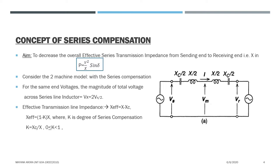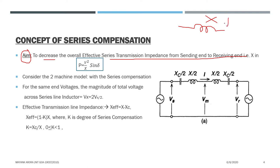The concept of series compensation: the aim is to decrease the value of the series transmission impedance from the sending end to receiving end. This value was X, so we have to decrease X to increase power. We know the power formula is V²/X times sin(delta). So we will see how to decrease X now.